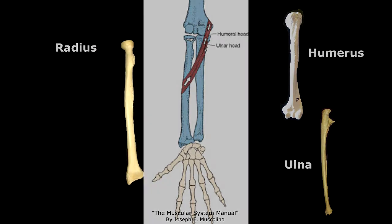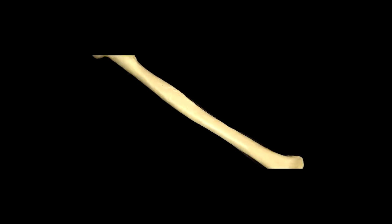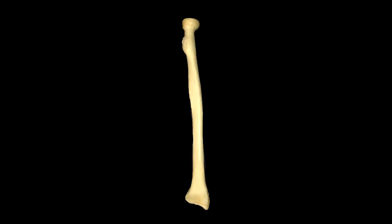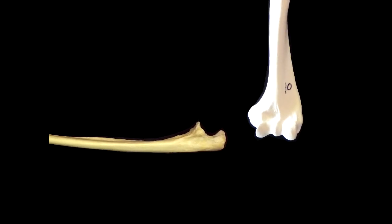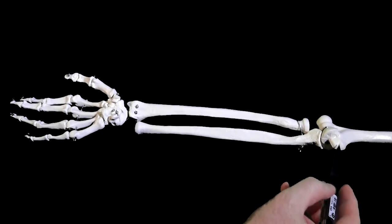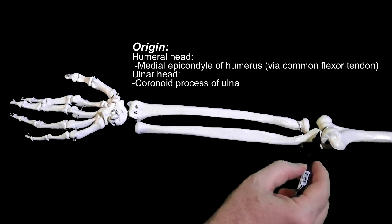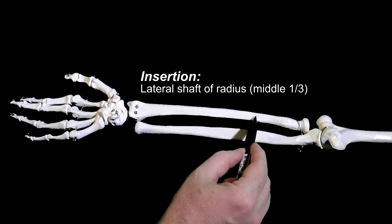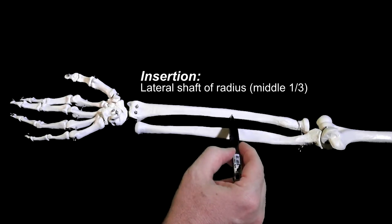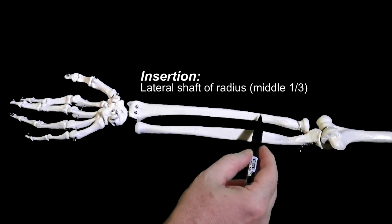Remember, the radius is the bone named for its ability to turn in a circle. Specifically, the pronator teres will originate from two structures. The humeral head originates from the medial epicondyle of the humerus, and the ulnar head originates from the coronoid process of the ulna. Both heads insert upon the middle third of the shaft of the radius.